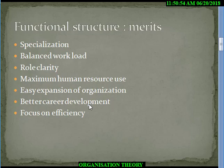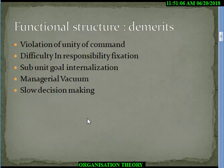If a new plant is set up — say plant A — it is authorized directly by the CEO and under the CEO's authority. But this plant is also involved in multiple functions: it needs production, finance, marketing, and personnel from different departments.